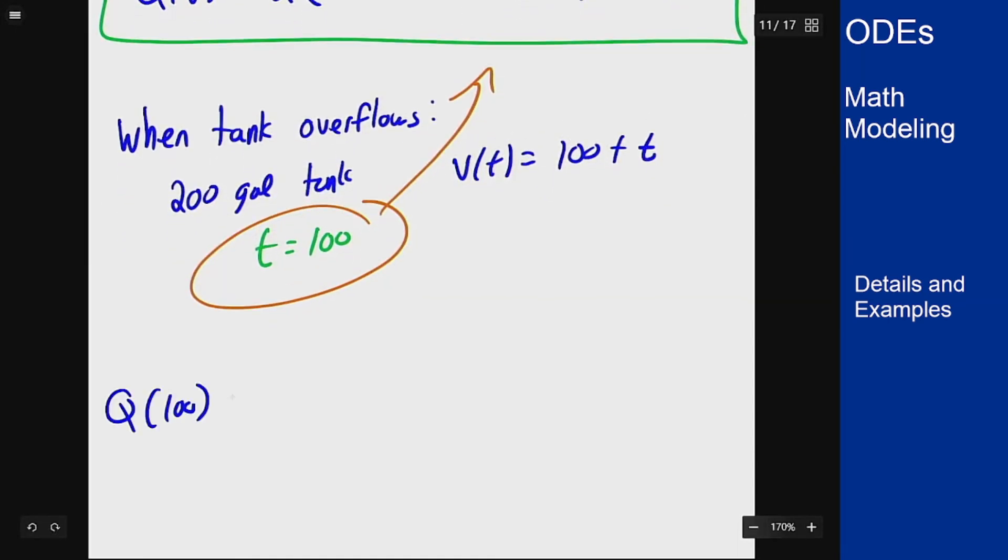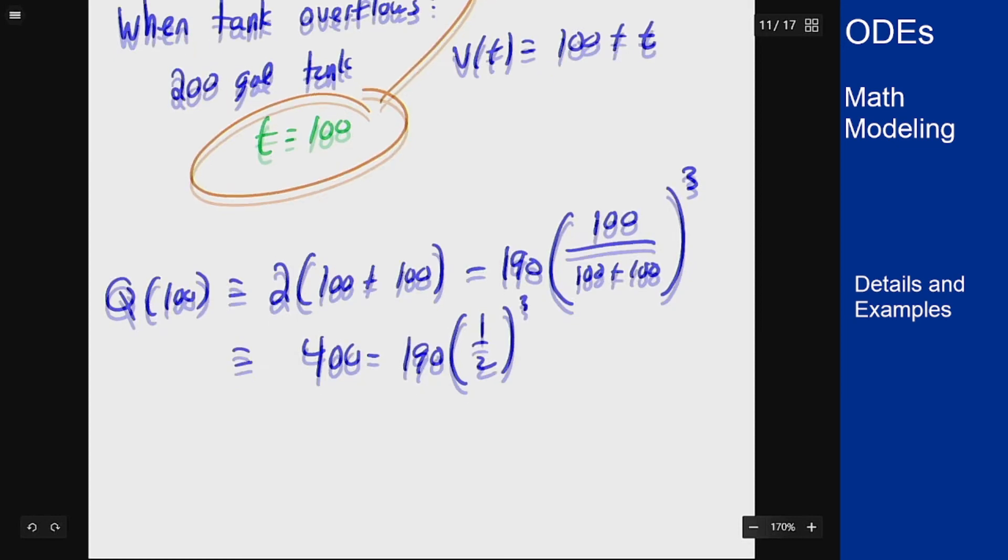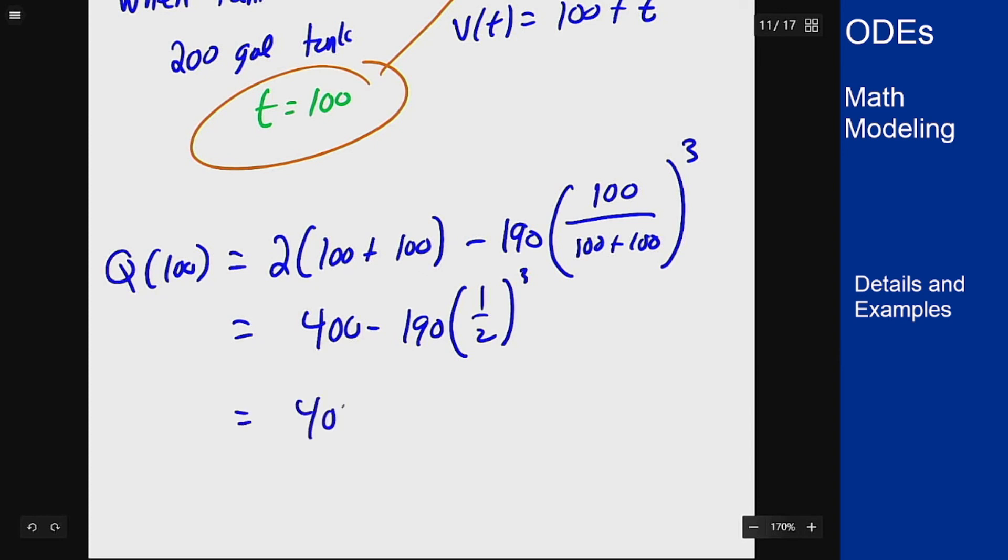The Q(100) is going to be 2 times 100 plus 100 minus 190 times 100 over 100 plus 100. I'll see 2 times 200 here are 400 minus that should be cubed, 190 times 1 half cubed. That'll be 400 minus 190 over 8, which comes out to 376.25 pounds.